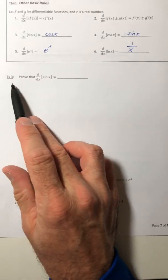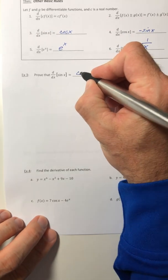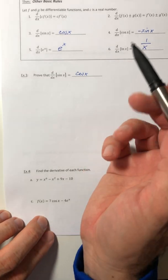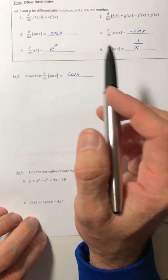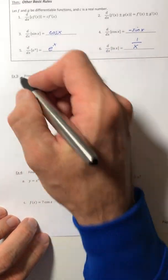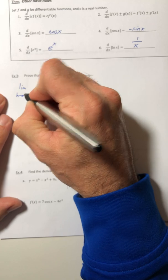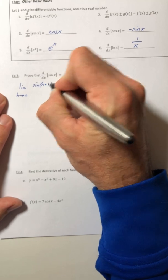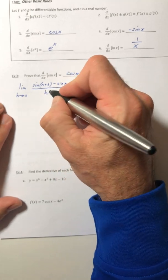Okay, so example three, we're going to prove that the derivative of sine is actually equal to cosine. We're just going to prove this one. The derivative of cosine would be proved in a pretty much similar manner. So anytime you prove that the derivative is something, you go back to that limit definition. So the limit as h approaches zero of sine(x + h) minus sine(x), all over h.